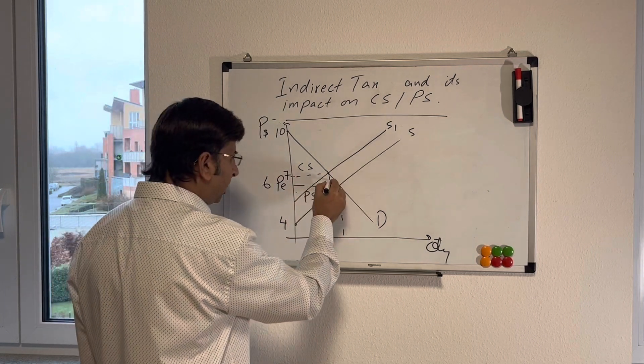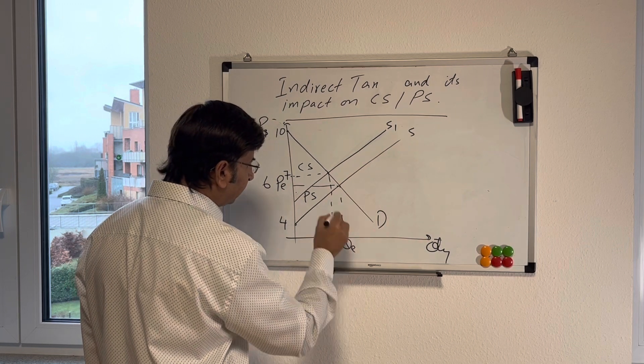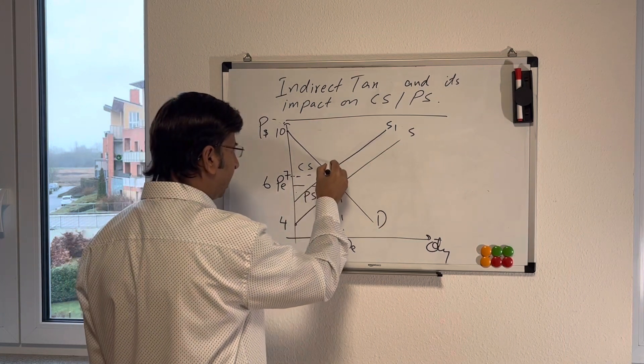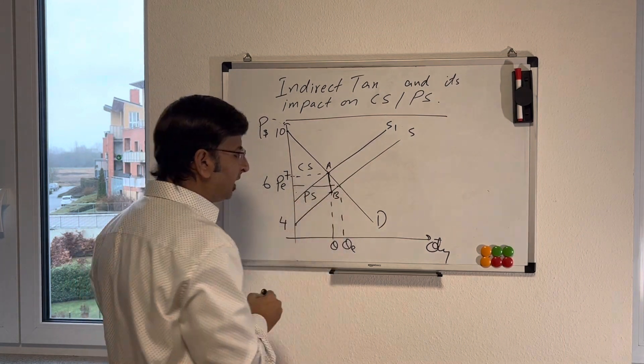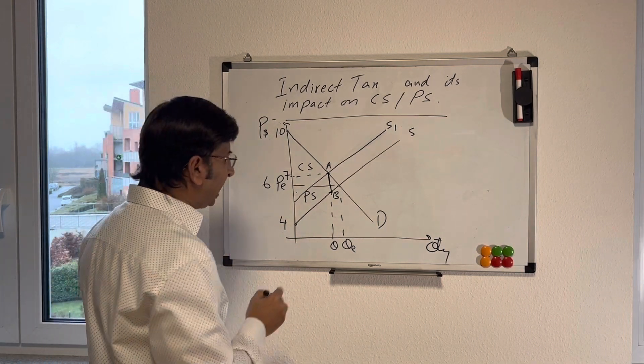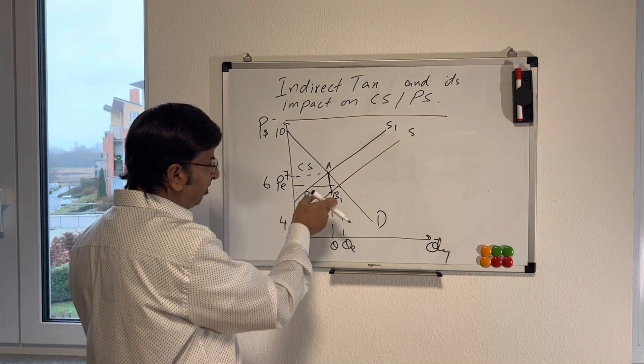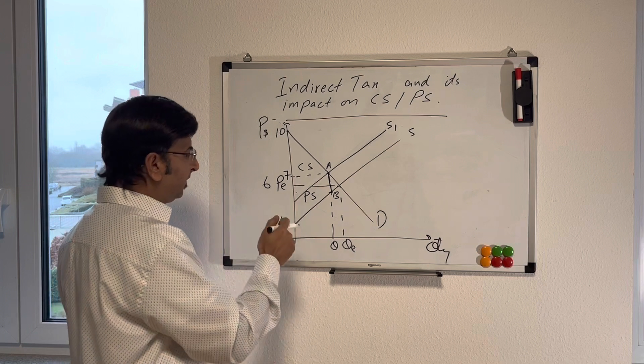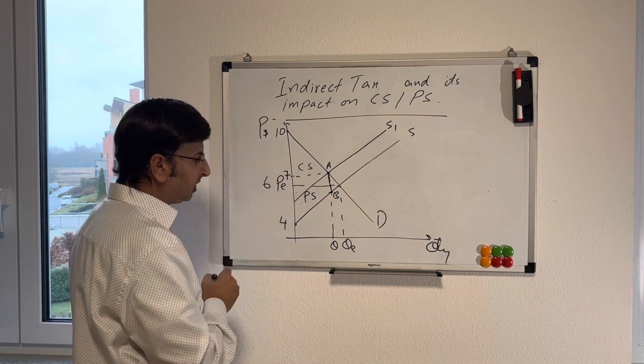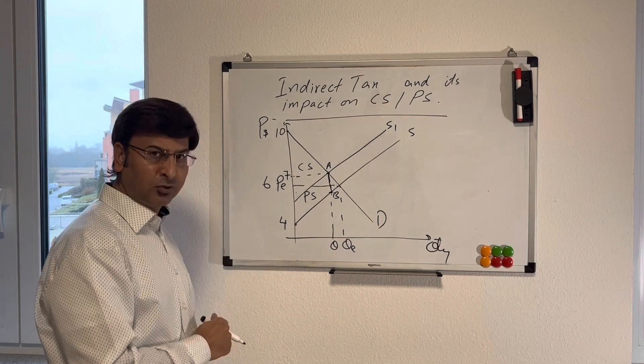And this vertical difference between the two supply curves A and B is the amount of tax per unit. As you could see that there is a bigger gap between the two curves than what is shown here between price 6 and 7. So this means not all of the tax is passed on to the consumer.